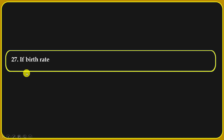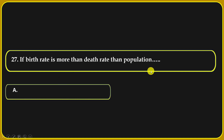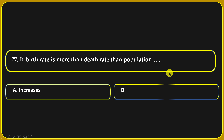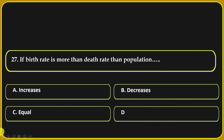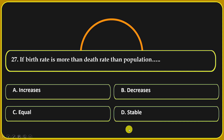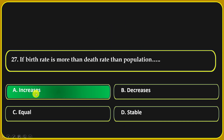If birth rate is more than death rate, then population: increases, decreases, stays equal, or stable. Increase is the correct answer.